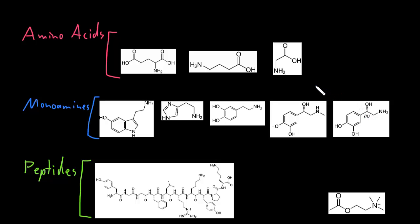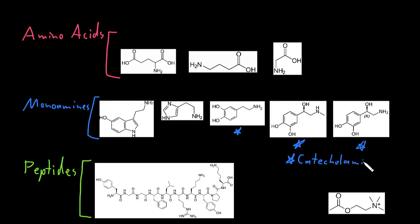Some of the monoamines — these three — are also called by a different name: the catecholamines. Catecholamines are a subgroup of the monoamines, and they have a catechol group, which has a benzene ring and two hydroxyl groups. All three of those monoamines have this catechol group.